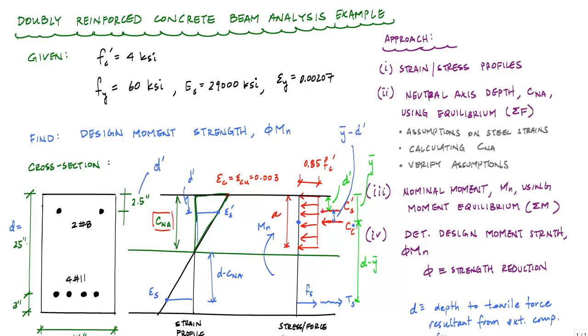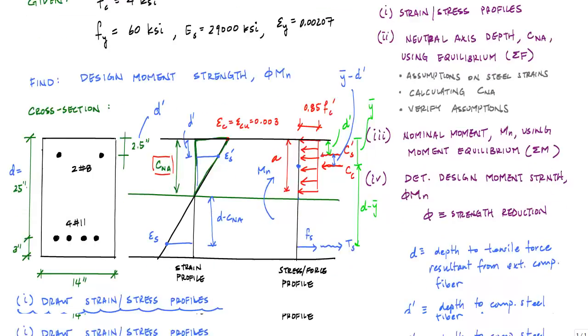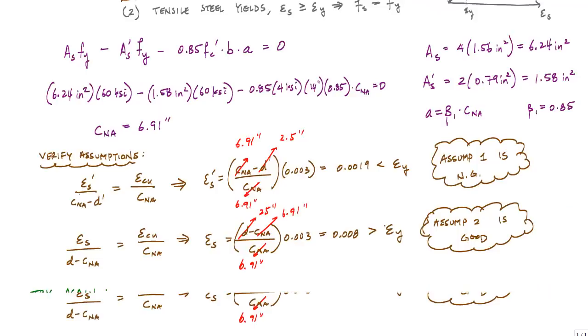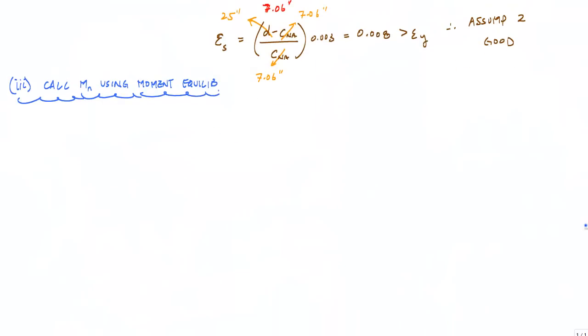This distance I've already established is D minus Y bar. MN is just a moment which gets thrown into the equation. When I take moments about the compression force resultant, saying that counterclockwise is positive, I get minus MN plus C'S times (Y bar minus D prime) plus TS times (D minus Y bar) equals zero.